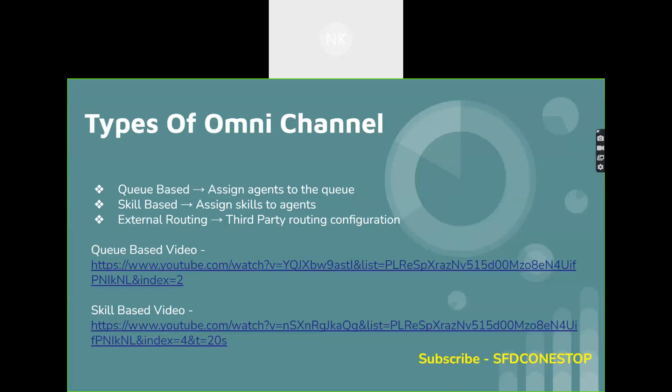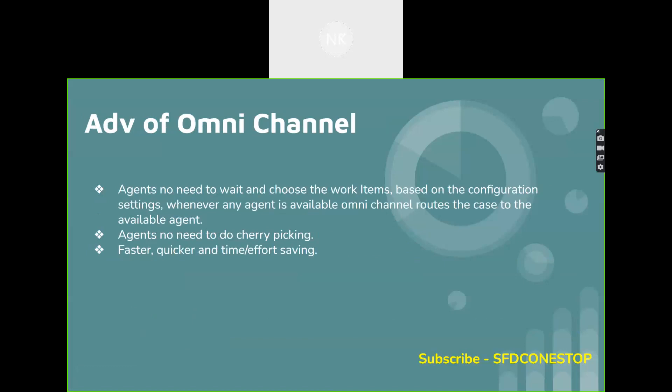Queue-based routing means whenever agents are assigned to a specific queue, according to whatever configurations you do, the cases get assigned to them automatically based upon queue-based routing. We have covered a video related to queue-based routing and also a video related to skill-based routing. The advantage of using omni-channel is that agents do not need to wait and choose work items — whenever any agent is available, according to the omni-channel type, whether queue-based or skill-based, the cases get assigned to the available agents. It is not needed for agents to do the cherry picking.